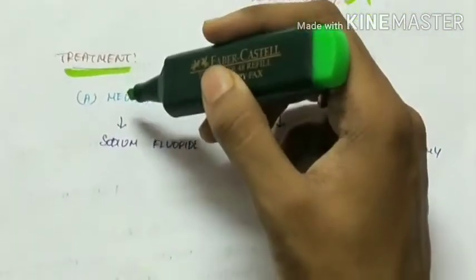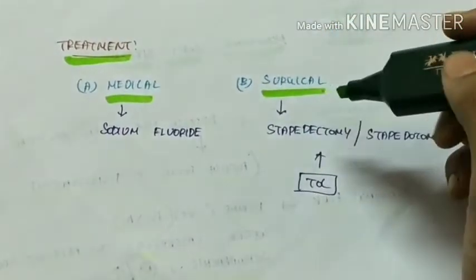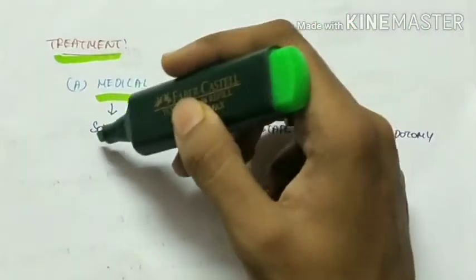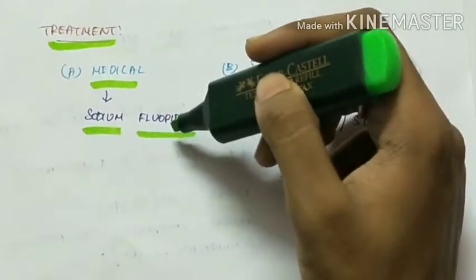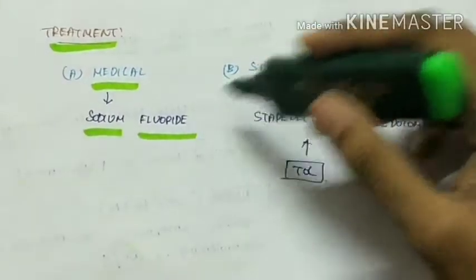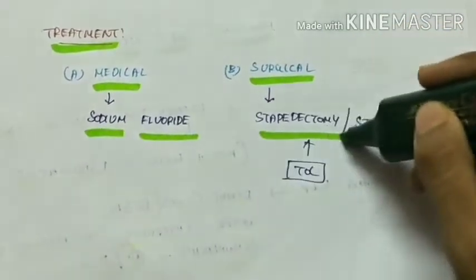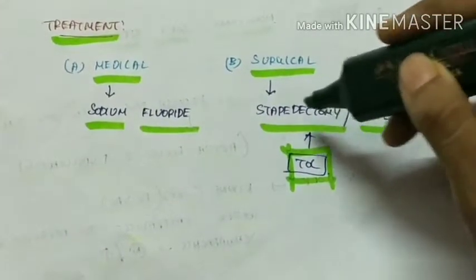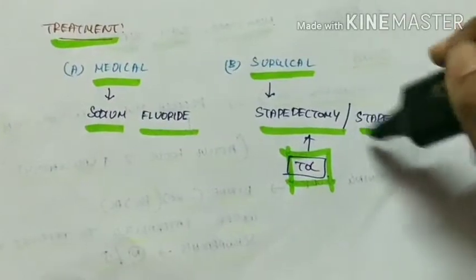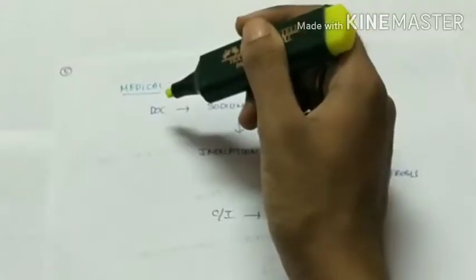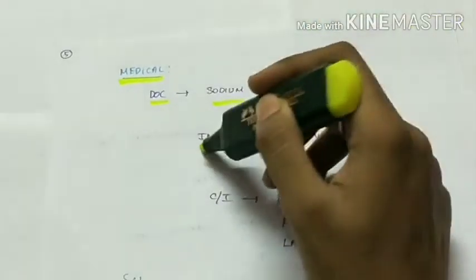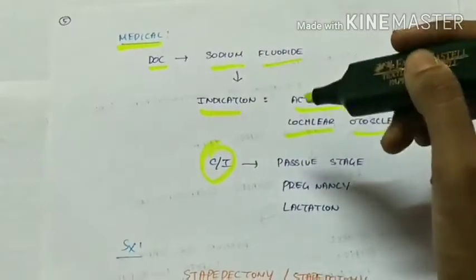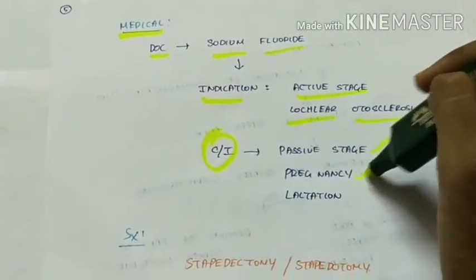Treatment includes both medical and surgical options. Medical treatment uses sodium fluoride, though it is done rarely and is not very effective. The drug of choice is sodium fluoride, indicated during the active stage and for cochlear otosclerosis. Contraindications for sodium fluoride include the passive stage, pregnancy, and lactation.